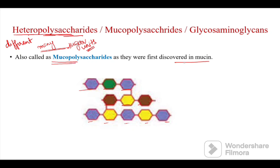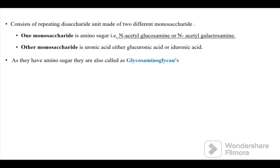Heteropolysaccharides are also called mucopolysaccharides because they were first discovered in mucin. Those present in human beings are called glycosaminoglycans (GAGs). So the other names for heteropolysaccharides are mucopolysaccharides and glycosaminoglycans.